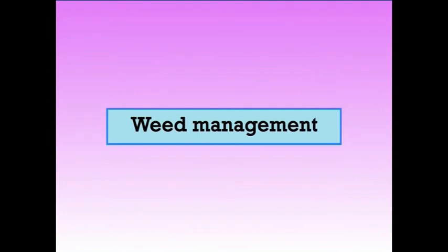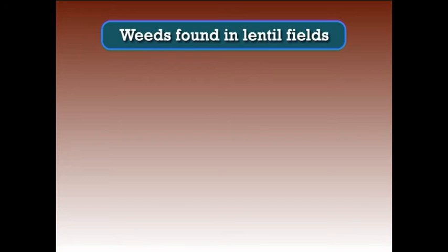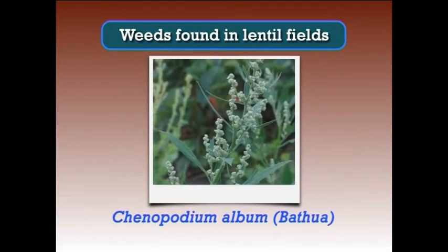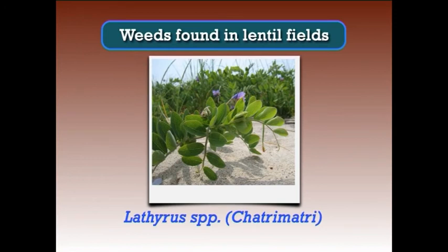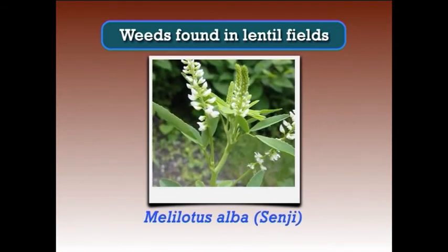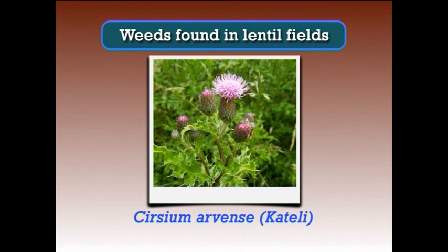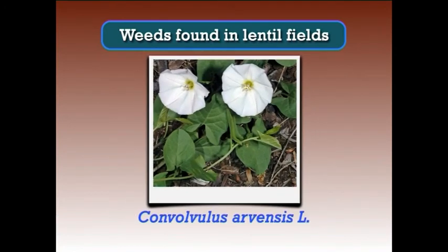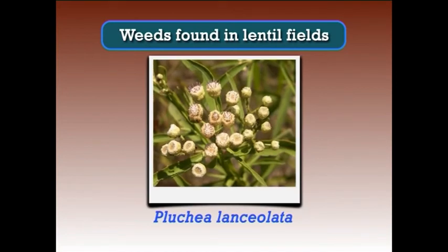In the lentil crop, the period from 30 to 60 days after sowing is most critical for competition with weeds. The major weeds found in lentil fields are Chenopodium album (Batua), Lathyrus species (Chatrimatri), Vicia sativa (Ankari), Melilotus alba (Sanji), Cirsium arvense (Katelli), Convolvulus arvensis, and Pluchea lanceolata. Maintenance of a weed-free period of 45 to 60 days from sowing is important.